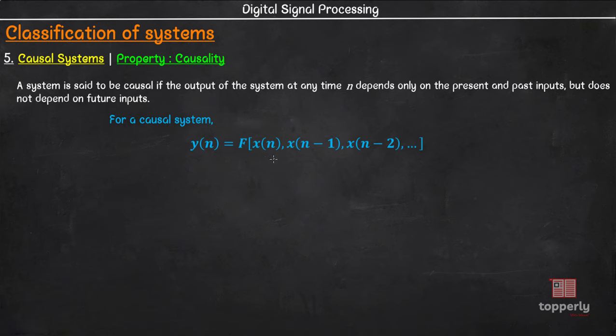That is only the present and past inputs. Any system which does not satisfy this condition is called a non-causal system. Now that you are familiar with the definition, let us see some solved examples on this topic.